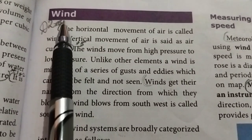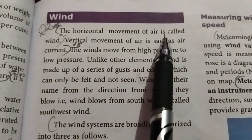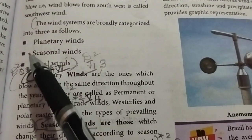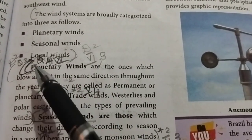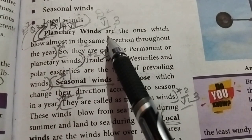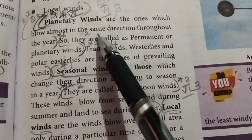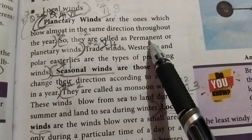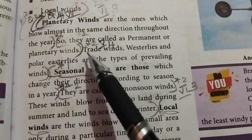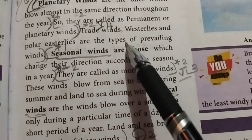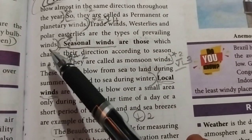Number 2: Write about the wind and its types. Page 101. Wind is the horizontal movement of air. The wind systems are broadly categorized into three: planetary winds, seasonal winds, and local winds. Planetary winds are those which blow almost in the same direction throughout the year, so they are called permanent or planetary winds.